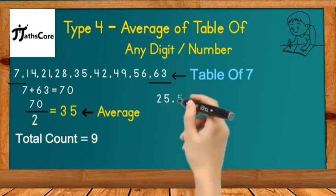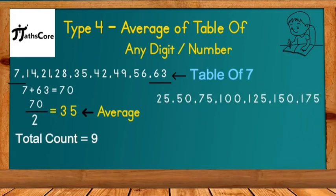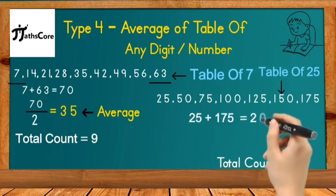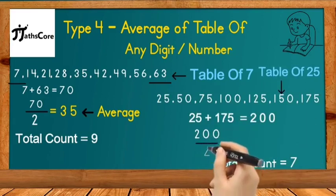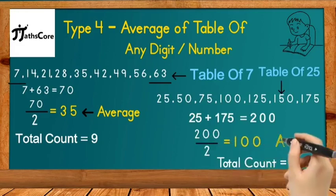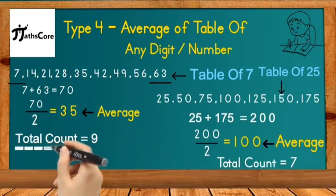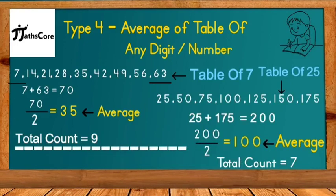Second example is 25, 50, 75, 100, 125, 150, 175. According to the Vedic math concept, we need to add first and last number together. 25 plus 175 is equal to 200, and 200 divided by 2 is equal to 100, which is the average of all these 7 numbers. So in this way you can find out the average of all these 4 types of numbers.